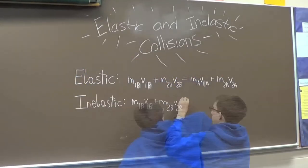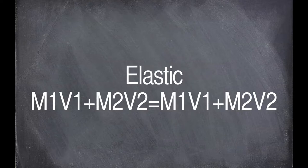There's an equation for each of these. In an elastic collision, the mass times the velocity of the two objects are added together, and it's the same before and after the collision.